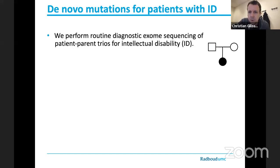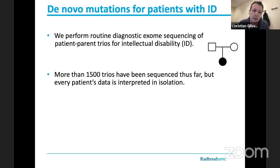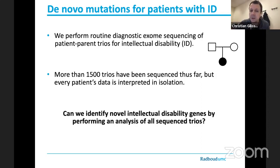This story starts several years ago when we already performed routine exome sequencing diagnostics for patients with intellectual disability. We did this in a trio approach because we knew that de novo mutations are an important cause, so we sequenced all three family members. At this time we sequenced approximately 1500 trios. What we noticed is that when the molecular geneticist interprets the data, he does it in isolation — looking at a single patient — and because he looks at them one by one, he may find a de novo mutation in a gene that is so far unknown and classify it as not relevant. Then three months later he might see a different patient with a similar mutation in the same gene and not remember seeing it previously. Our question was: is it possible to identify new genes by looking at all of these samples at the same time, performing a cohort analysis?